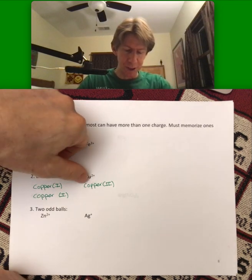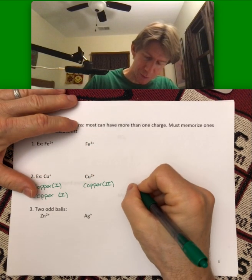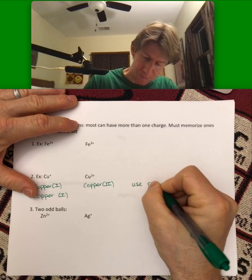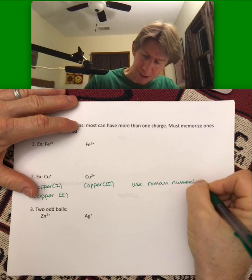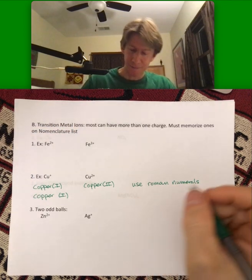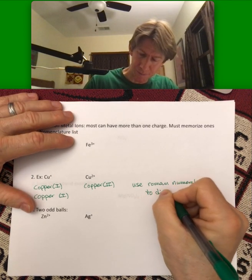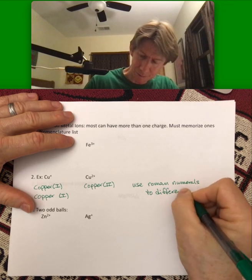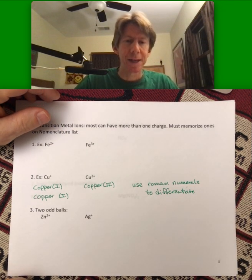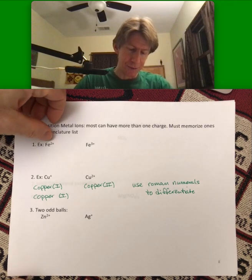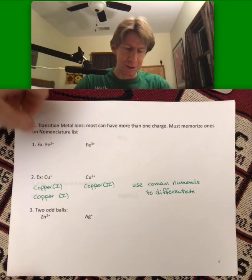Again with no space. Copper two. And whenever there's more than one choice, you use Roman numerals to differentiate, to tell them apart. So and then here, so for copper it's plus one plus two.